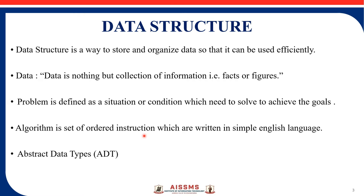So data structure has data and data types, and algorithm is nothing but the set of ordered instructions. On that basis — what are abstract data types, or ADT? A data type is a collection of values and a set of operations on those values. ADT is a useful tool for specifying the logical properties of a particular data type.